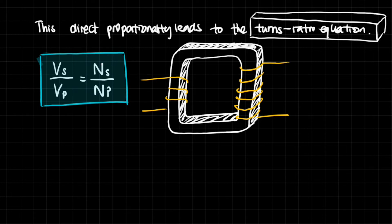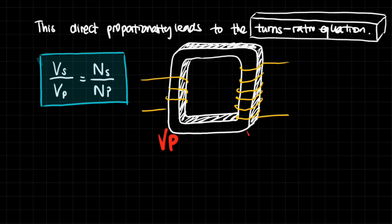This direct proportionality leads to the turns ratio equation. Because the voltage is directly proportional to the number of turns, we can use ratios to calculate the voltage in the primary coil versus the voltage in the secondary coil. Looking at this example: this is the primary coil with a primary alternating voltage, and this is the secondary coil with a secondary alternating voltage. The primary coil has three turns and the secondary coil has six turns.